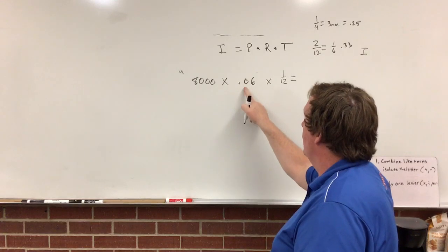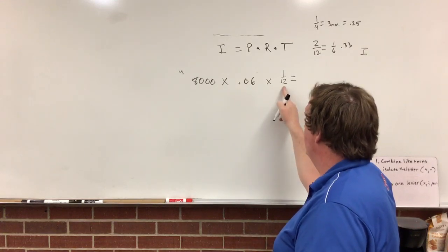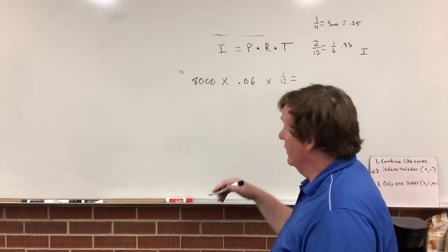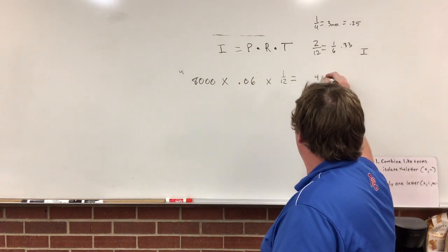So you take 8,000 times 0.06 and then we divide it by 12. When we do that on our calculator, 8,000 times 0.06 divided by 12, we get $40.